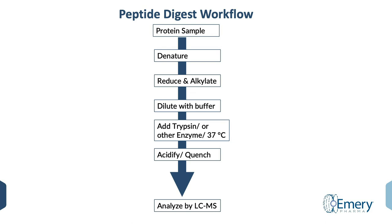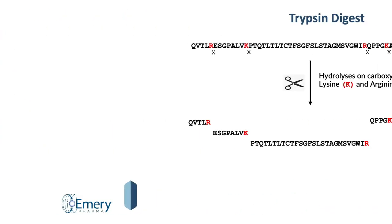Trypsin or other enzyme is added and the sample is digested at 37 degrees. Trypsin hydrolyzes the sequence on the carboxyl side of the lysine and arginine residues, generating peptides of a smaller size that can be chromatographed in the UPLC-MS system. 100% coverage is not often obtained, and so our frequent strategy uses a subsequent digest with an enzyme that has complementary hydrolytic properties. Enzymes such as Glu-C can be used for this purpose.